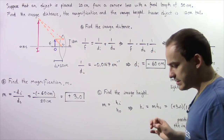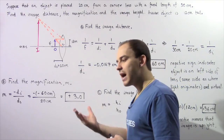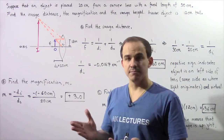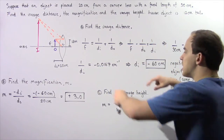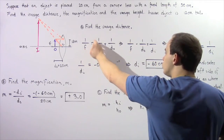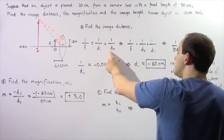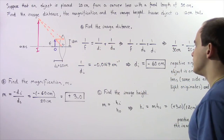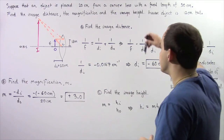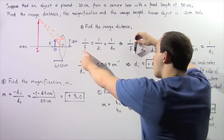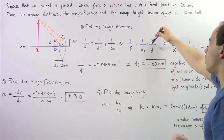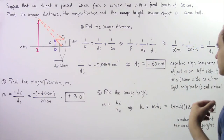Let's begin with part A: what exactly is the image distance? We know the focal length and we know the object distance, so we can use the thin lens equation: one divided by the focal length equals one divided by the image distance plus one divided by the object distance. Rearranging, one divided by the focal length minus one divided by the object distance equals one divided by the image distance — what we're looking for.